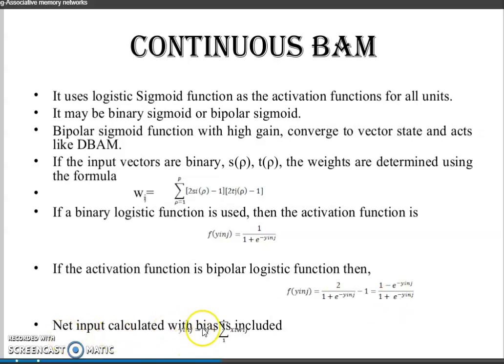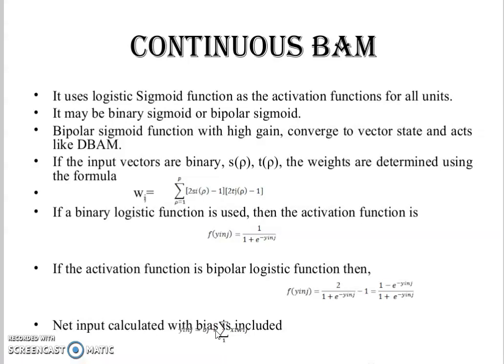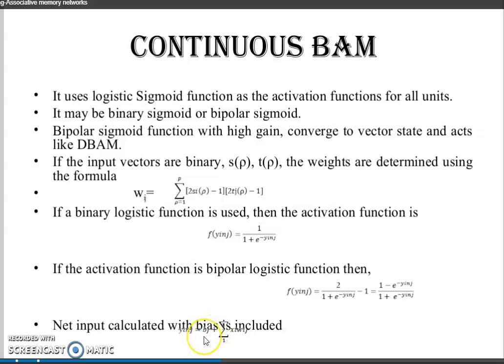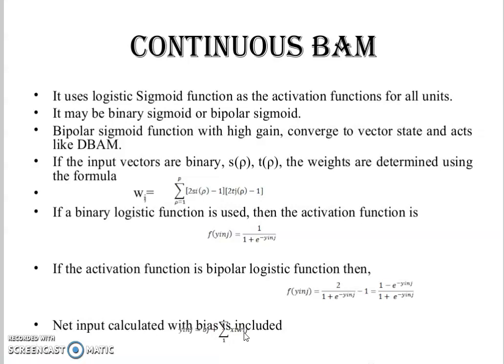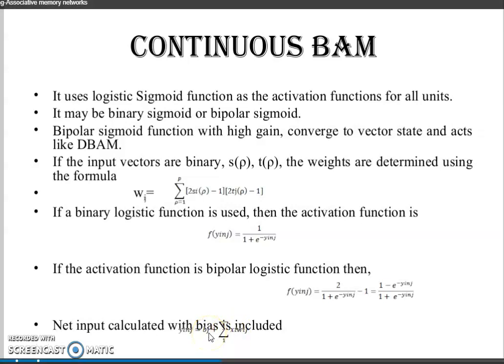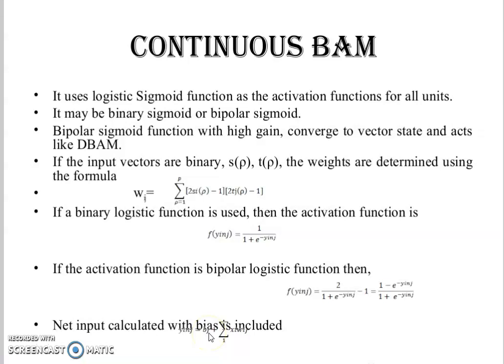Net input calculated with bias is included. We apply the net input equation: y_inj equals b_j, that is the bias value, plus sigma i of x_i times w_ij. We have to add the bias value — that is the difference value. The bias value distinguishes discrete bidirectional associative memory from continuous bidirectional associative memory. We apply the algorithm flowchart and the activation function called architecture.